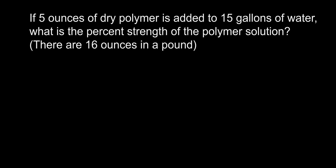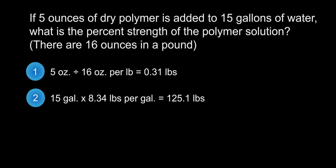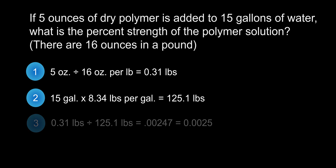All we need to do is figure out some simple unit conversions and turn it into a percent. It doesn't matter if you round your answers — your final answer will be very close to the correct choice if you follow these steps. First, convert ounces of dry polymer into pounds: divide 5 ounces by 16 ounces per pound, which equals 0.31 pounds. In step 2, convert gallons of water to pounds. One gallon of water weighs 8.34 pounds, so multiply 15 gallons by 8.34 pounds per gallon, giving 125.1 pounds. Next, divide pounds of dry polymer by pounds of water: 0.31 divided by 125.1 equals 0.00247, which rounds to 0.0025.